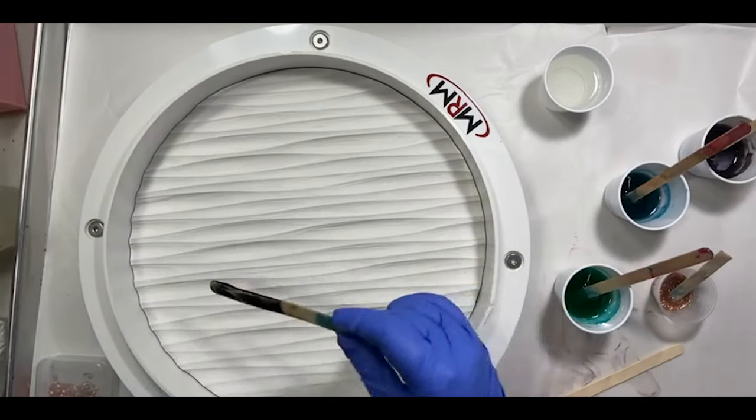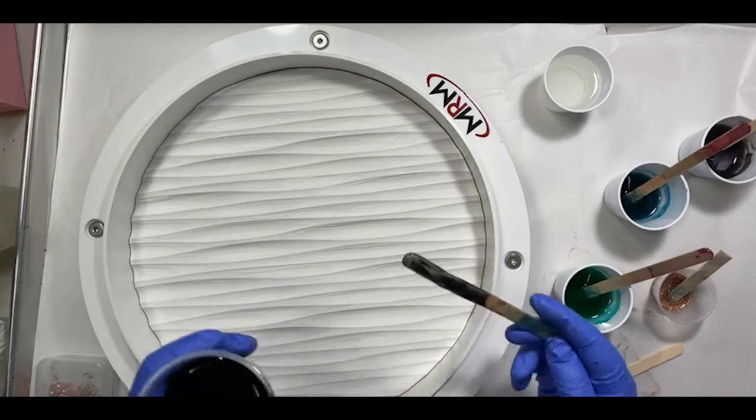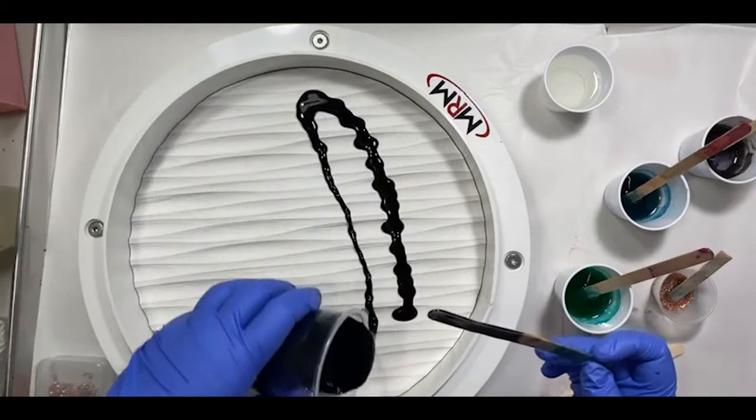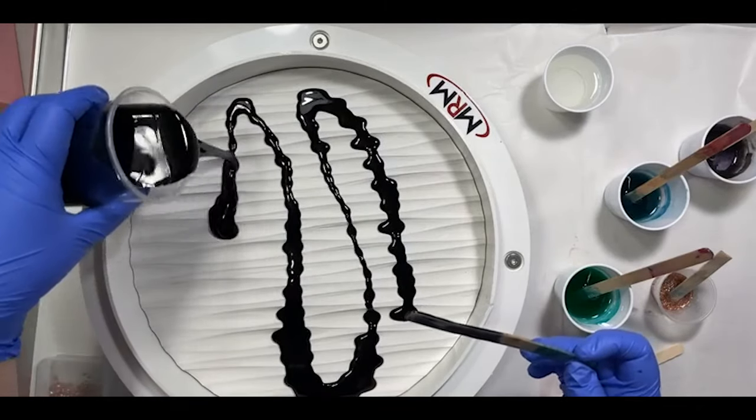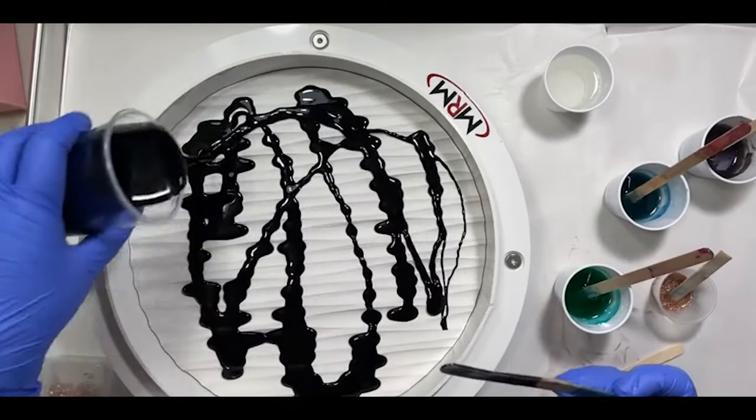I'm going to start with the black. These panels have all these grooves cut into them, and one of the techniques that I like to use is pouring perpendicular to the grooves because then it doesn't look quite as stripey.